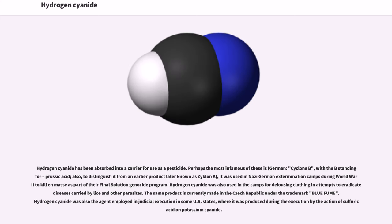Hydrogen cyanide has been absorbed into a carrier for use as a pesticide. Perhaps the most infamous of these is Zyklon B. It was used in Nazi German extermination camps during World War II to kill en masse as part of their Final Solution genocide program. Hydrogen cyanide was also used in the camps for delousing clothing in attempts to eradicate diseases carried by lice and other parasites. The same product is currently made in the Czech Republic under the trademark Uragan D2.